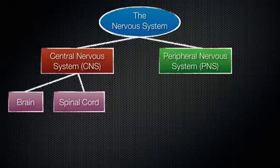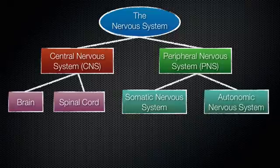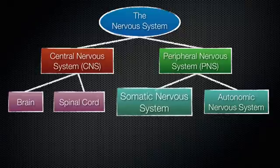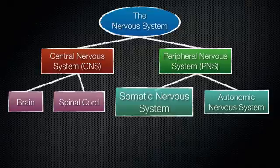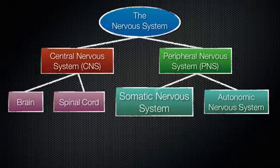The peripheral nervous system consists of two parts: the somatic nervous system and the autonomic nervous system. The somatic nervous system is where we get control of voluntary activities, and this is where skeletal muscles are involved. For example, if I want to walk, I need to contract the muscles in my legs — that is a voluntary activity controlled by the somatic nervous system. If I want to smile, I need to control the muscles in my face.